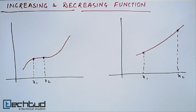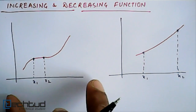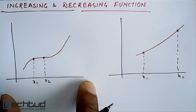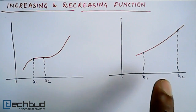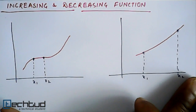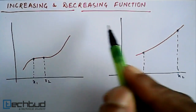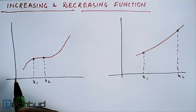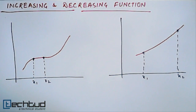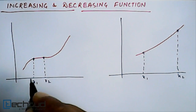Hello everyone, welcome back to tech2.com. In this lecture we will start with increasing and decreasing nature of functions. As the name suggests, an increasing function is one whose value is increasing, and a decreasing function is one whose value is decreasing with respect to increase in x. Let's start with increasing first.